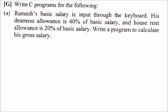Write a C program for the following: Ramesh's basic salary is to be input through the keyboard. His DA, that is dearness allowance, is 40% of the basic salary, and HRA, that is house rent allowance, is 20% of the basic salary. We have to write a program to calculate his gross salary.